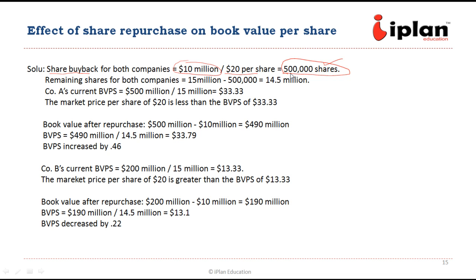These 500,000 shares will be bought back for both Company A and Company B. Remaining shares after the repurchase will be 15 million minus 500,000 shares, which is 14.5 million. Now let us look at the book value of Company A, which is $500,000,000. Book value per share will be $500,000,000 divided by 15,000,000 outstanding shares, which comes out to be $33.33.